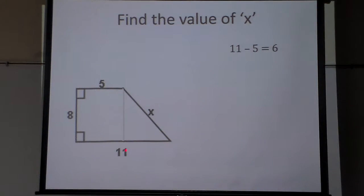Well, if I take the 11, the whole length, and minus this 5 because the rectangle has parallel and congruent sides, opposite sides, I know that this side right there is 6.